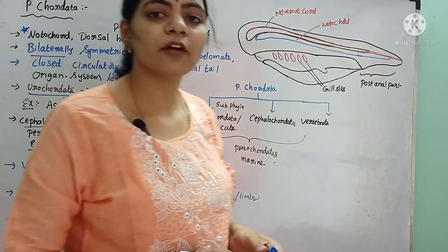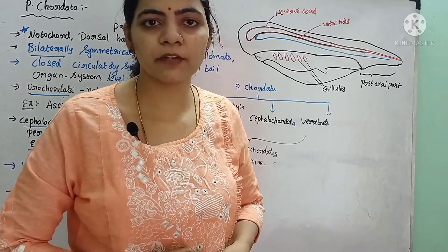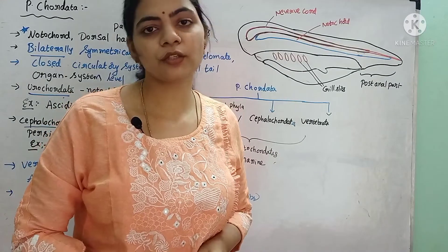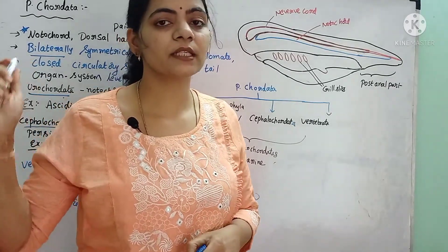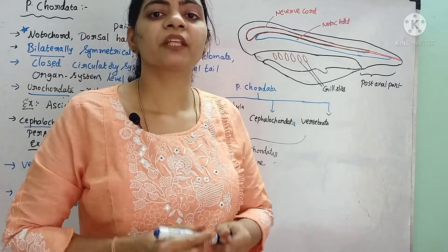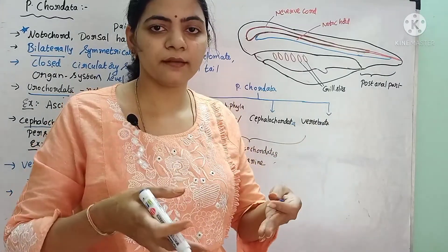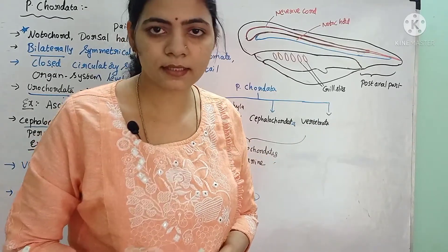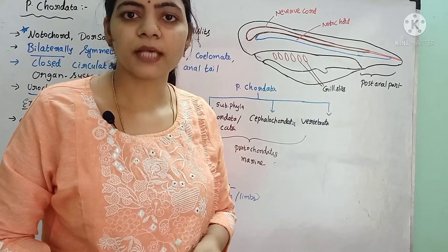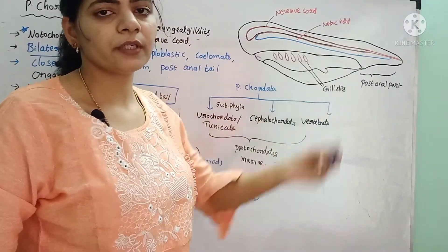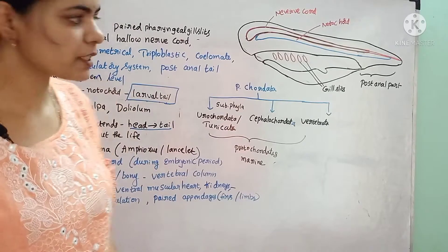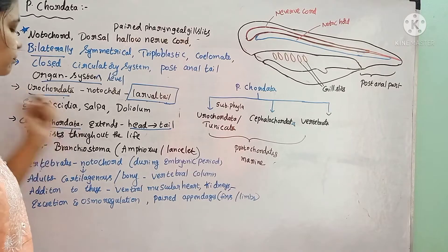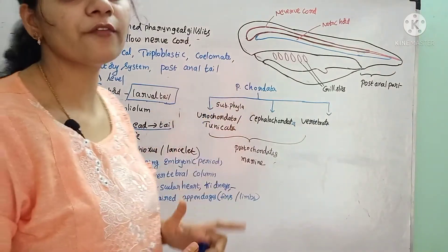They express organ system level of organization. Organ system level means different organs group together and form a physiologically functional system, called an organ system. They consist of excretory system, digestive system, nervous system — different types of systems are present. Hence, they exhibit organ system level of body organization.